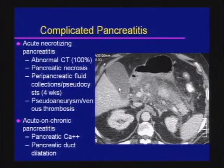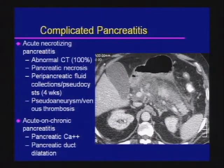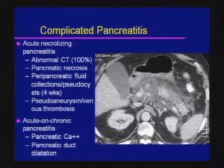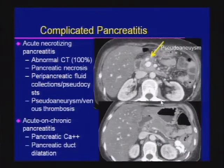In complicated acute necrotizing pancreatitis, the difference between an acute fluid collection and a pseudocyst is based on the presence of a well-defined capsule or wall; pseudocysts usually present four weeks after the clinical presentation. Look for vascular complications such as pseudoaneurysms and thrombosis. Also look for findings of chronic pancreatitis — calcifications and irregular ductal dilatation.